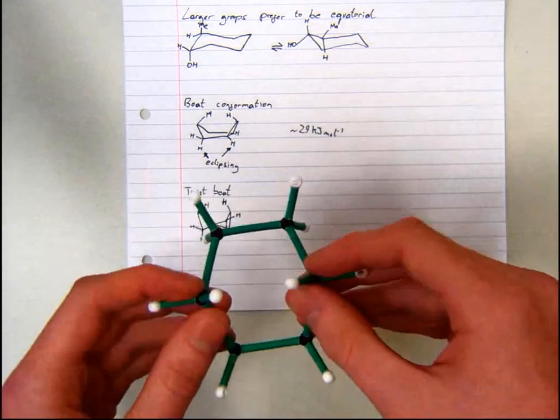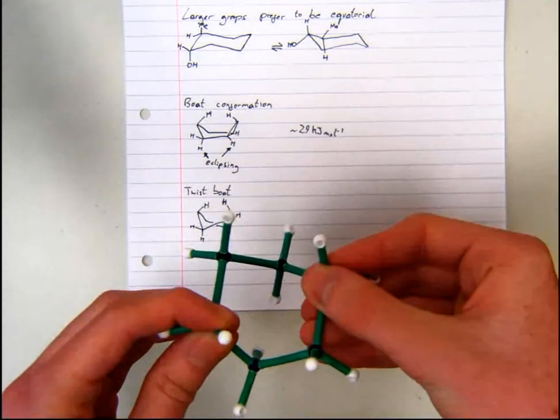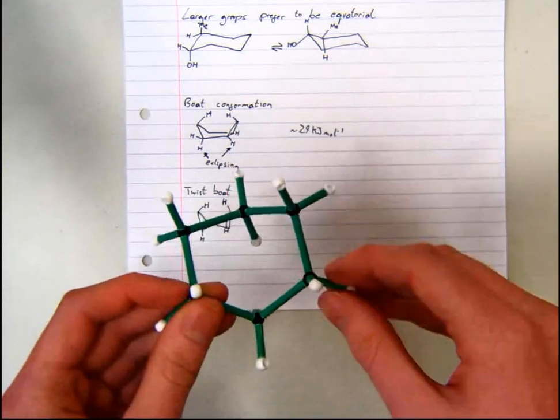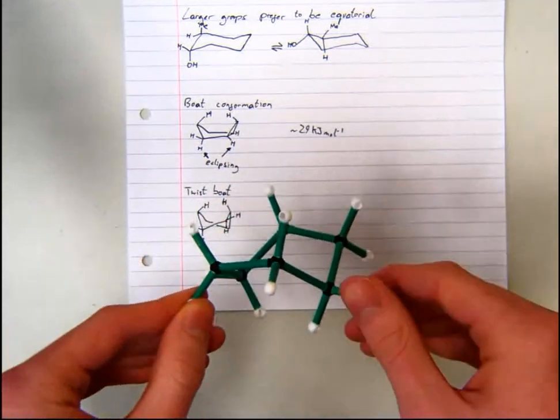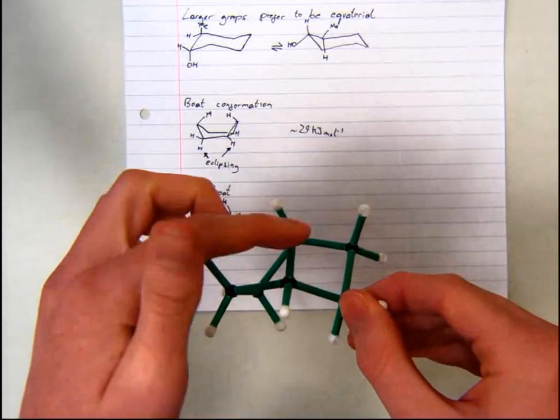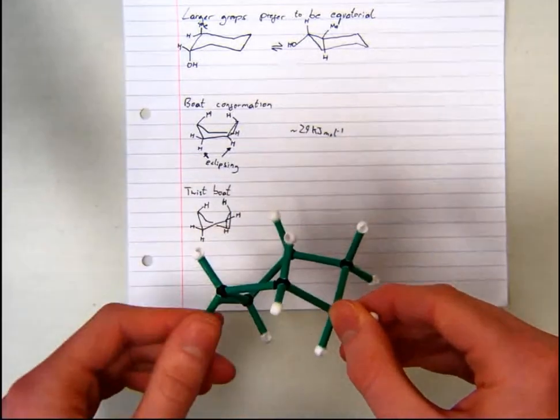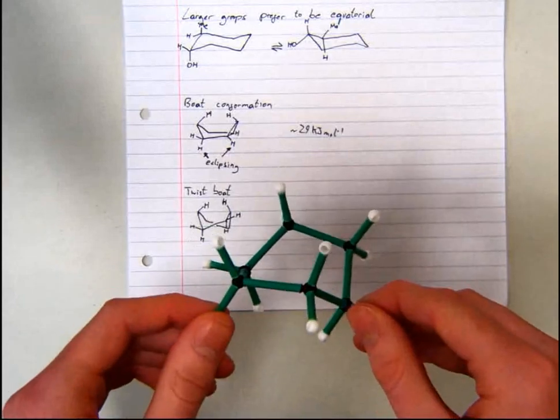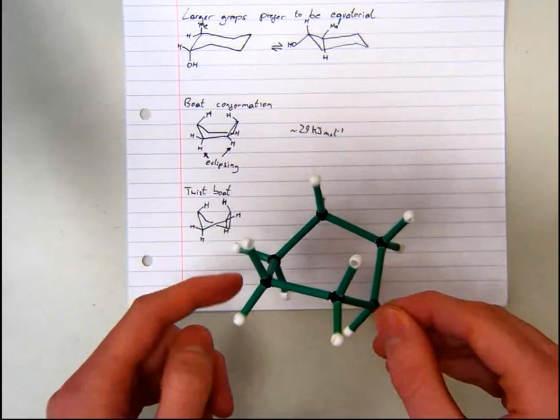You can create the twist boat by simply rotating the top two atoms of the boat conformer. As you can see, the flagpole hydrogens are no longer as close together, and the eclipsing interactions have been removed.